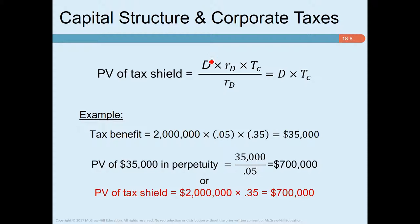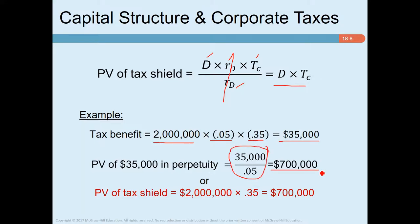Using the formula: present value of tax shield equals debt (D) times the interest rate (rd) times the corporate tax rate (Tc) divided by rd — which simplifies to D times Tc. With two million in debt and a 35 percent tax rate, the annual tax benefit is 35,000 (using the example figures) and the present value of the tax shield as a perpetuity is 700,000. So the firm has an additional asset with a present value of 700,000 by using this amount of debt.